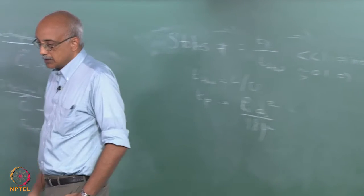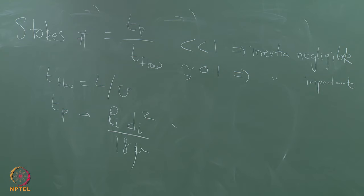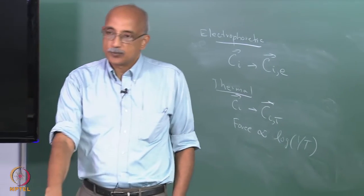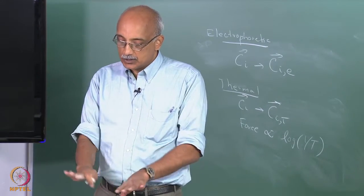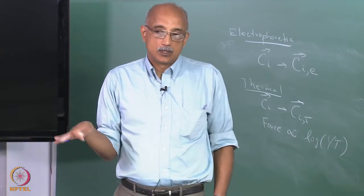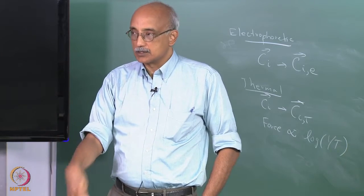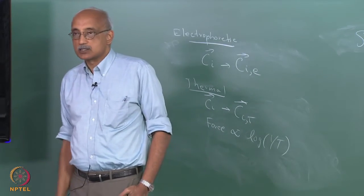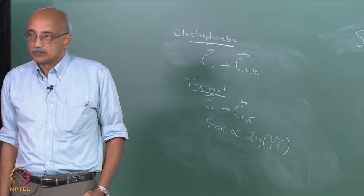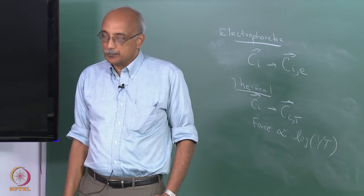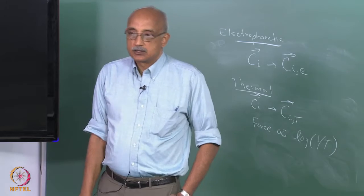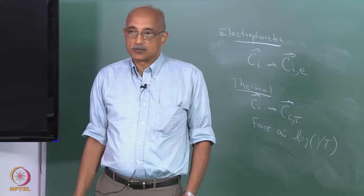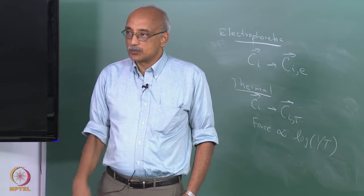Once the Stokes number approaches about 0.1 or larger, inertia is important to consider. Inertia in a CVD context means that particles entrained in a fluid deviate from the streamlines as the fluid approaches the surface — the fluid flows along the surface, whereas particles impact it due to their inertia. Heavy molecules or vapors in a CVD reactor can also possess sufficient inertia to deviate from the carrier gas flow streamlines as they approach a substrate.